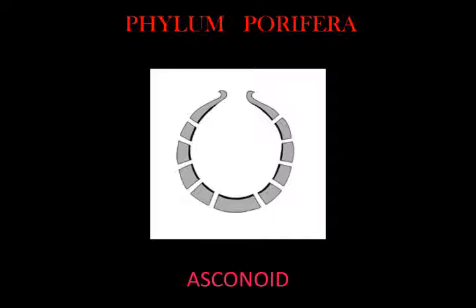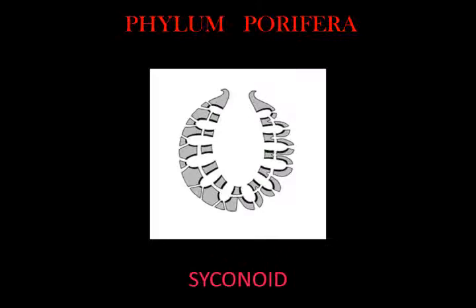Some sponges overcome this limitation by adopting the syconoid structure, in which the body wall is folded. The inner pockets of the pleats are lined with choanocytes and connected to the outer pockets by ostia. This increases the number of choanocytes and pumping capacity, enabling syconoid sponges to grow up to a few centimeters in diameter.